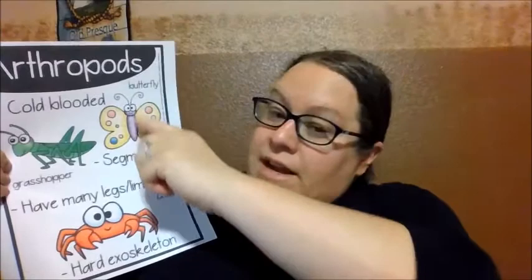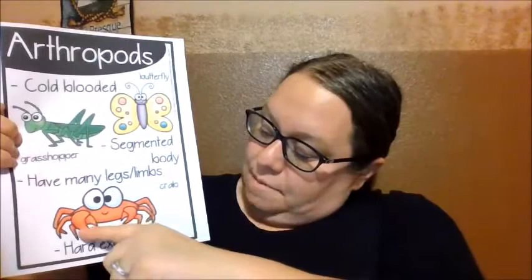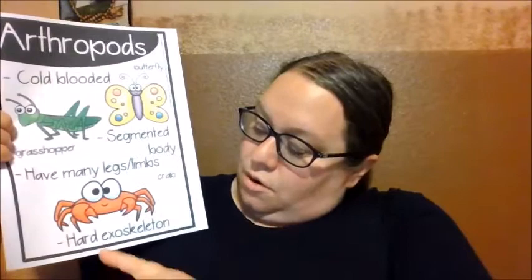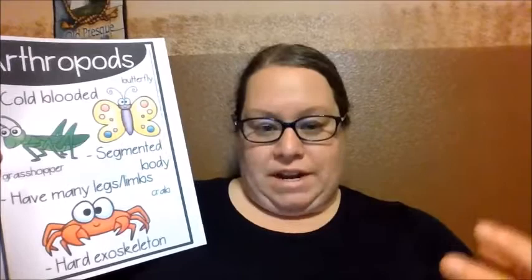Remember the butterfly — the caterpillar had six legs as an insect. The grasshopper has six legs, and the crab has six legs plus his claws. Arthropods also have a hard exoskeleton — a hard outer shell. Not like a seashell, just an outer covering that covers the body parts inside, like how we have skin that covers us. They have an exoskeleton that's hard and covers them.